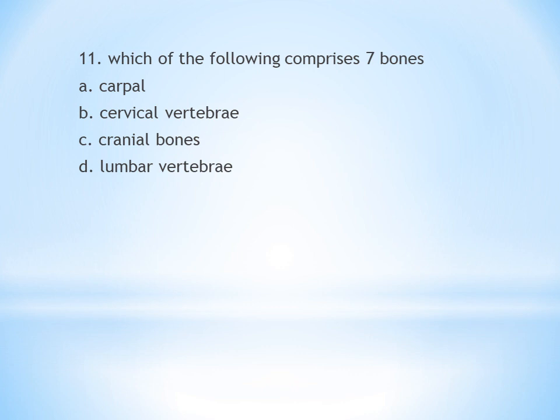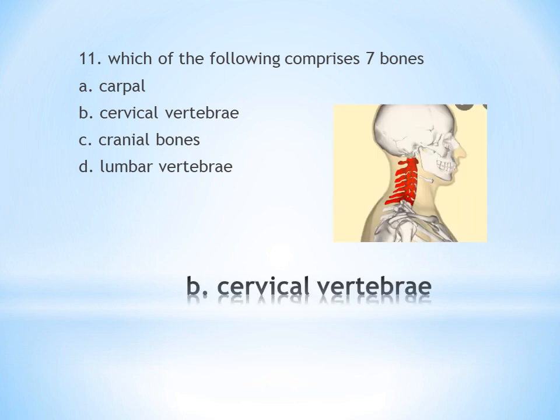Eleventh question: Which of the following comprises 7 bones? A. Carpal — 8 bones, B. Cervical vertebrae — 7, C. Cranial bones — 12, D. Lumbar vertebrae — 5. Cervical vertebrae is the answer: C7, T12, L5. Answer is B, cervical vertebrae.